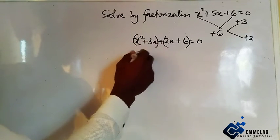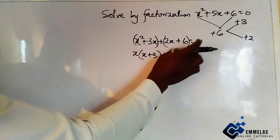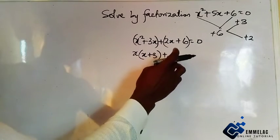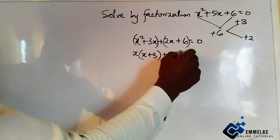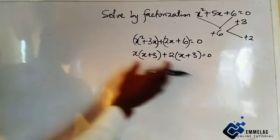Here we can see that we have x. We bring it out, so here we have x plus three. Then plus, what is common between two x and six? Here we have two, so you have x plus three, all equals to zero.